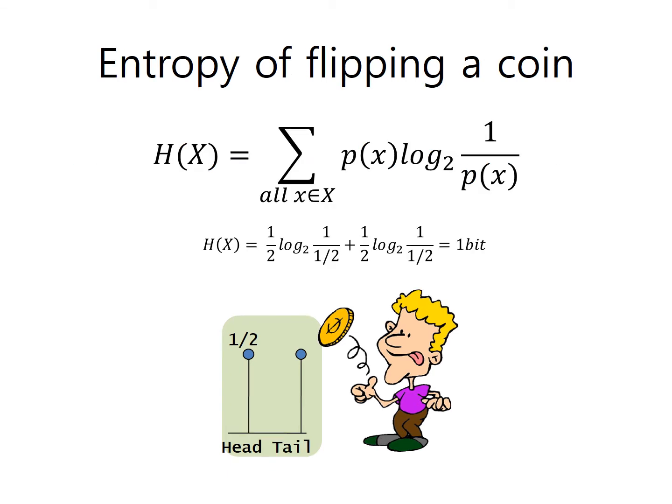There are two cases that can come from the flipping coin problem: head and tail. The average of the amount of information in these two cases is called entropy, the entropy of this information system.